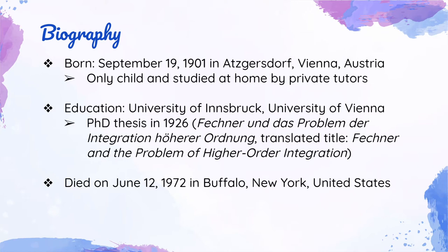His mother is Charlotte Vogel. He was an only child and studied at home by private tutors until he was 10. His parents got divorced when Ludwig was 10 and got remarried outside the Catholic Church. For his education, he started his studies at the university level in philosophy and art history at the University of Innsbruck and then at the University of Vienna. He chose biology over philosophy of science, as according to him, one could always become a philosopher later. He finished his PhD thesis in 1926, which is the FECNA and the Problem of Higher Order Organization.